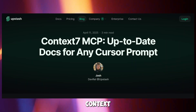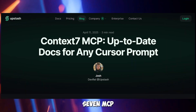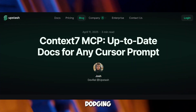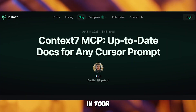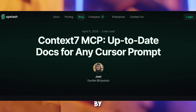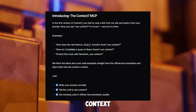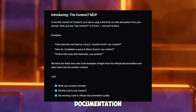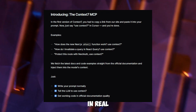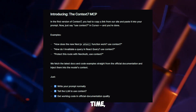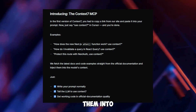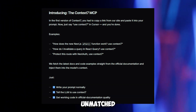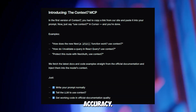Kicking off at number five: Context7 MCP server, a game changer for dodging AI hallucinations in your code. Developed by Upstash, Context7 fetches version-specific documentation and code snippets in real-time, injecting them into your IDE's LLM prompts for unmatched accuracy.